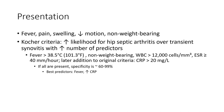Kocher Criteria: increased likelihood for hip septic arthritis over transient synovitis with increased number of predictors. Fever more than 38.5 Celsius, non-weight bearing, white blood cell count more than 12,000 cells, ESR more than or equal to 40 mm per hour. Later addition to original criteria: CRP more than 20.